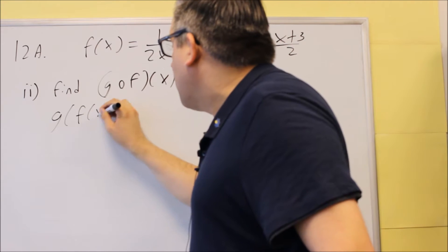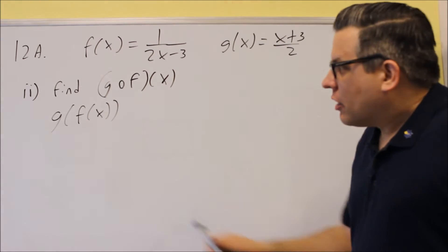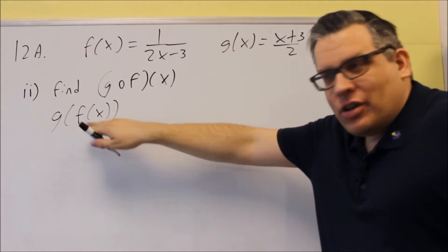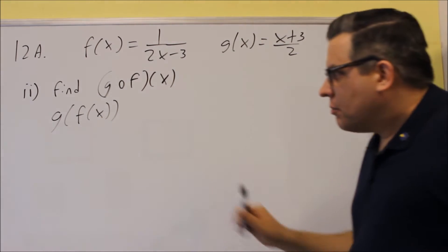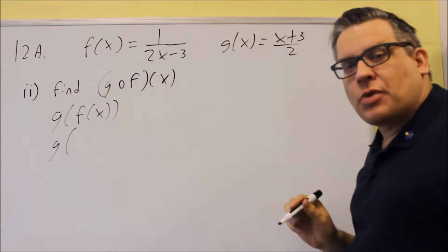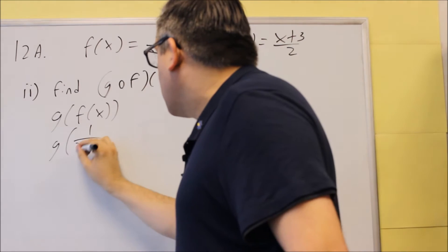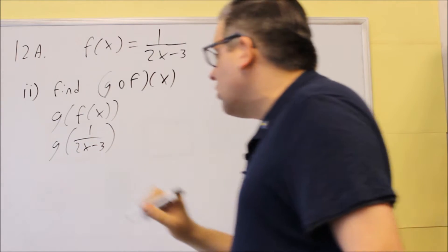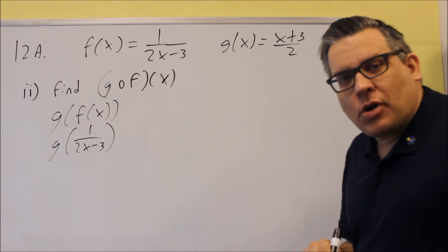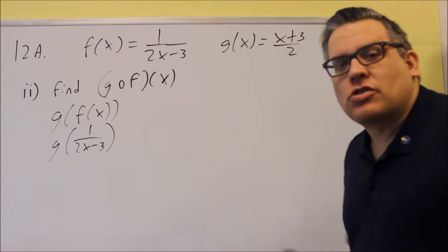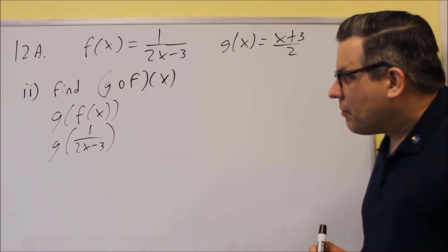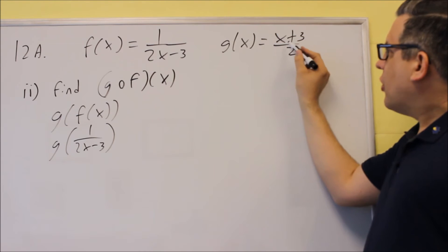First we start with the definition. We have g of f of x, which means we've got to put f into g. So f of x is going to be 1 over 2x minus 3. This time we don't have a number to put in, which means we're not going to get a numerical answer — instead we're going to get an expression. We've got to do g of 1 over 2x minus 3.